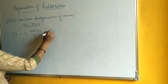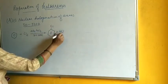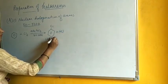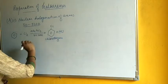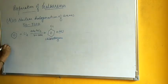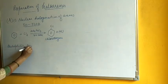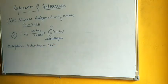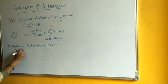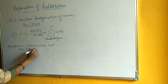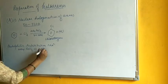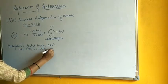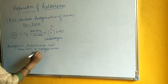Substitution takes place and we get chlorobenzene. This is an electrophilic substitution reaction. Anhydrous FeCl3 acts as a Lewis acid and as a halogen carrier. We have already discussed the mechanism of electrophilic substitution reaction at the class level.